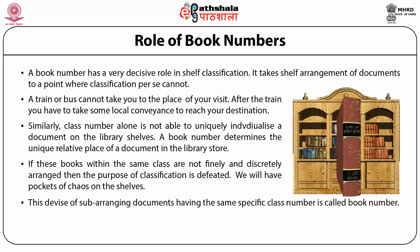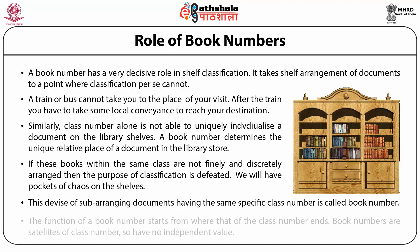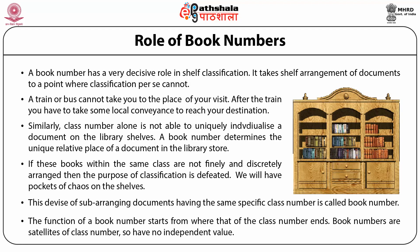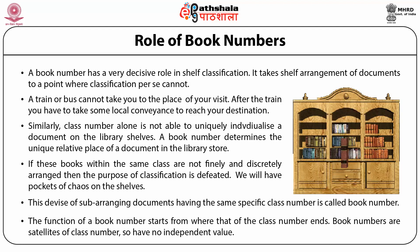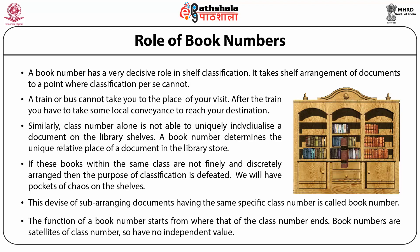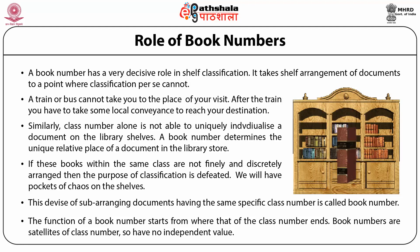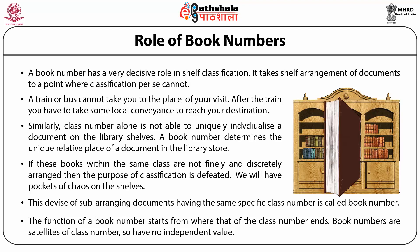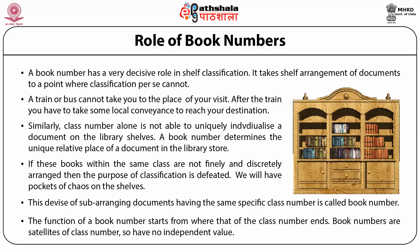Sometimes it is called author number. The function of book number starts from where that of the class number ends. Book numbers are thus satellites of a class number, and so have no independent value — by itself, a book number cannot arrange a document, but when it supports the class number, the book gets a unique place on the shelves and a unique call number.